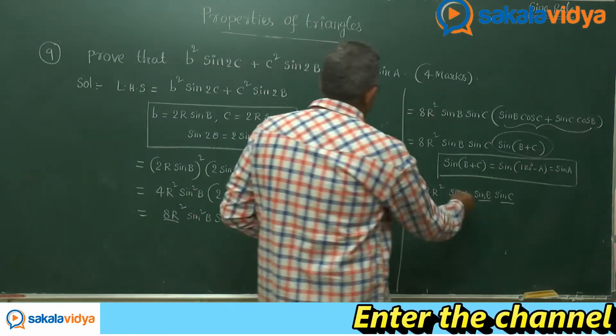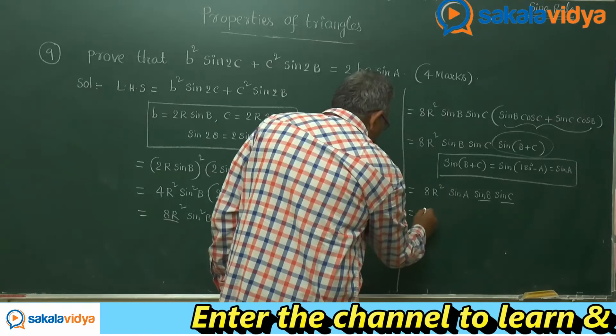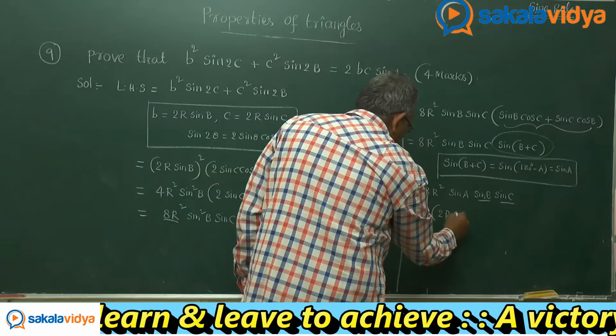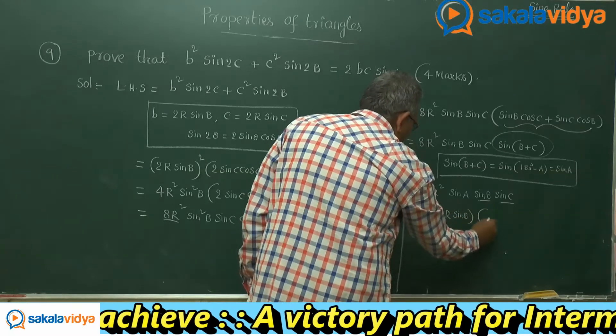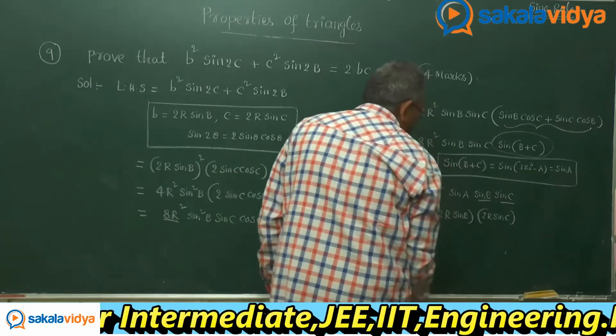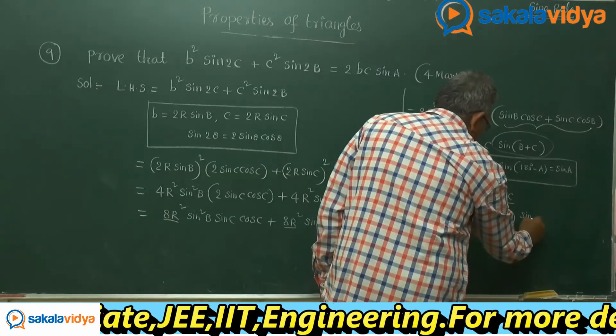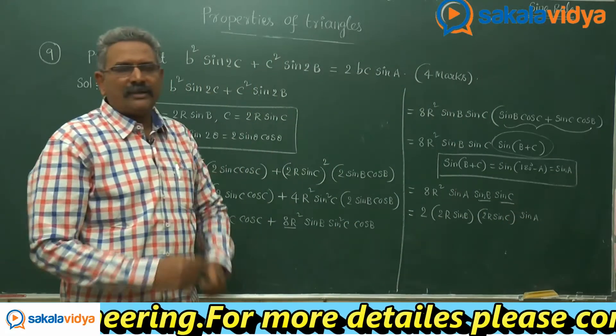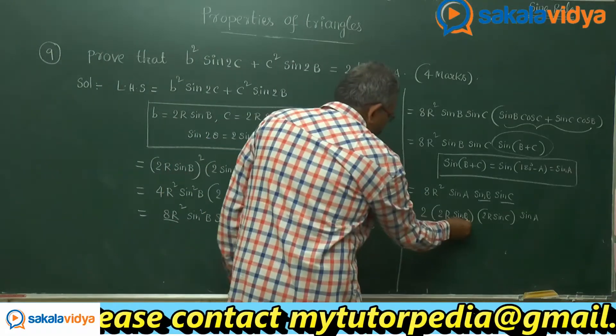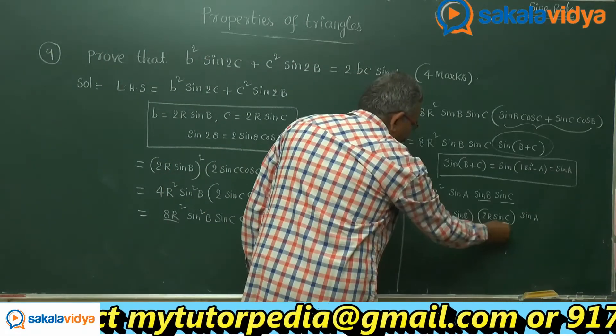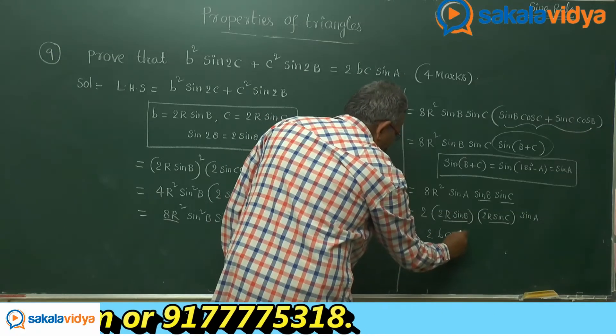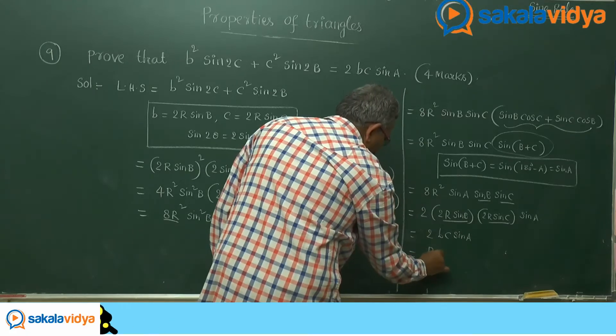Now this can be written like this. 2 common, this can be written 2r sin b. This we can write 2r sin c into sin a. Just check it. If you multiply, again you get the same step itself only. From sine rule, this is nothing but b, nothing but small c. This is 2bc sin a. This is RHS.